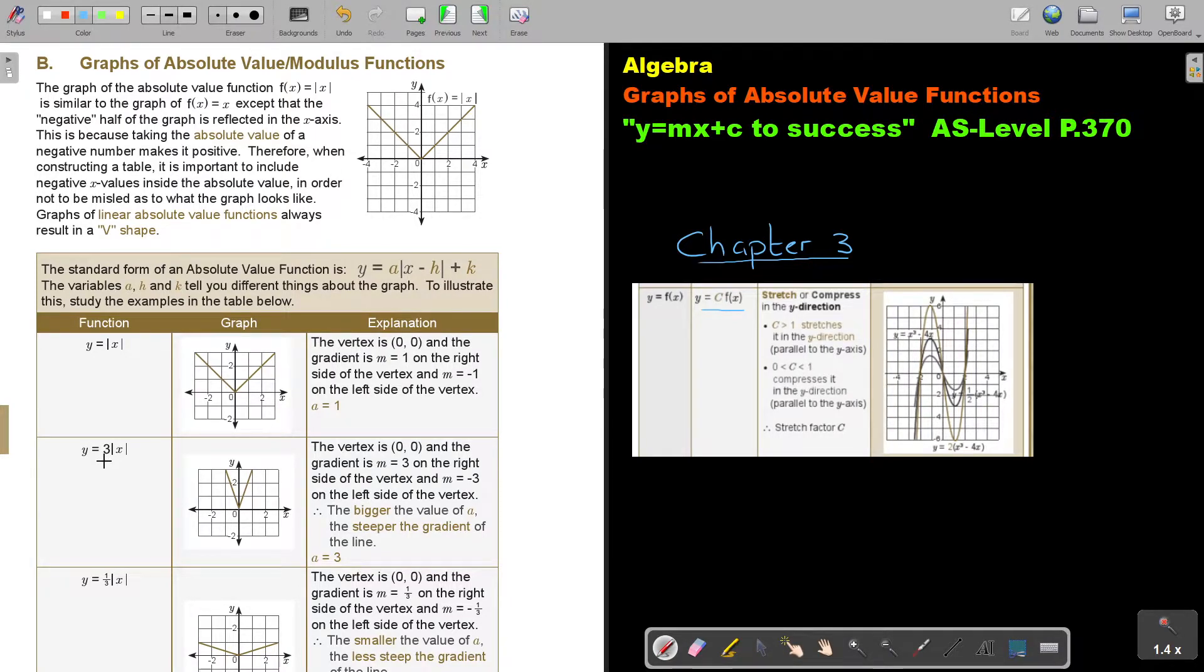So let's see what's the effect on this one. If it was 3 bigger than 1, the vertex and the gradient is now 3. So it's becoming steeper. The bigger the value of A, the steeper the gradient of the line.